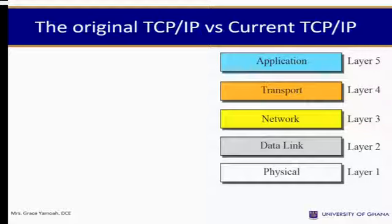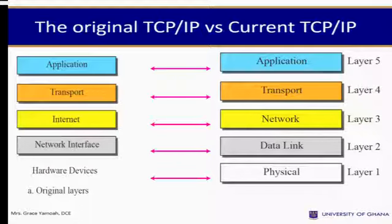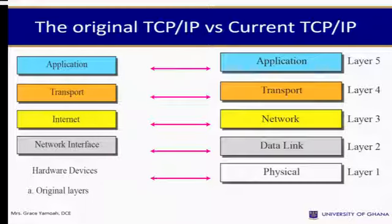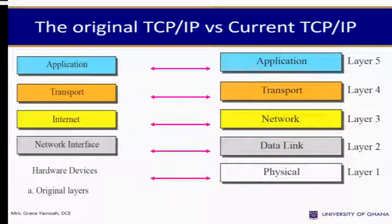Comparing old TCP/IP (four layers) with current TCP/IP (five layers): the application and transport layers are the same. The network and internet layers are equivalent. The difference is that the old model's network interface layer is now split into the current data link layer and physical layer. The old internet layer maps to the current network layer, and the hardware devices layer is now termed the physical layer.